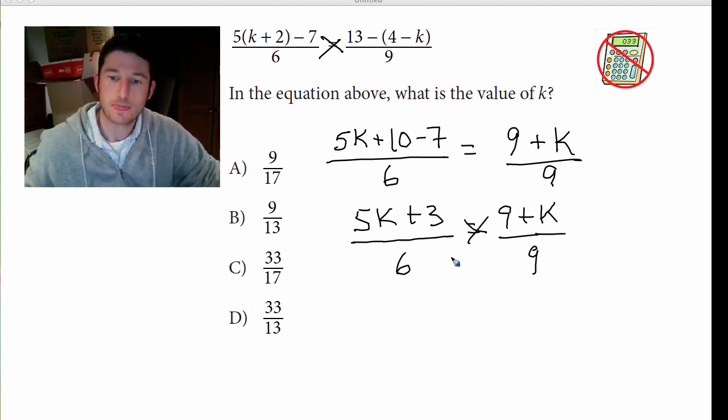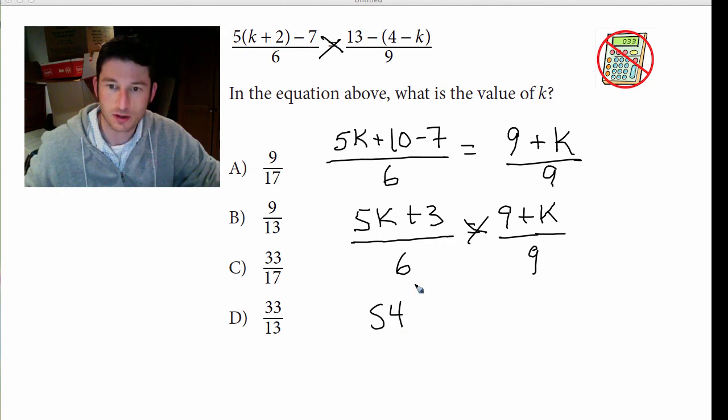Let's cross multiply now. So we have 9 times 6 is 54, 6 times k is 6k. 9 times 5 is 45 and we'll keep the k there. 9 times 3 is 27.